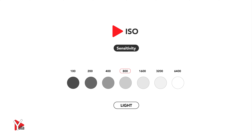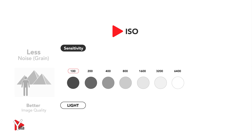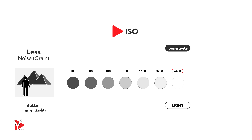Of the film. In digital cameras, the ISO reflects the sensitivity of the camera sensor. The lower the ISO number, the lower the sensitivity, the better the quality. The higher the ISO number, the higher the sensitivity of the sensor.